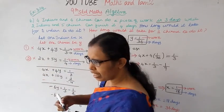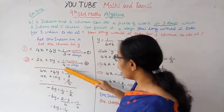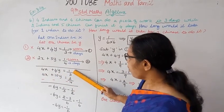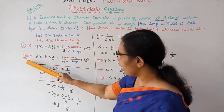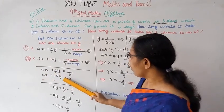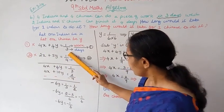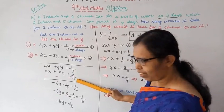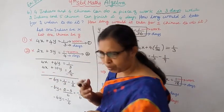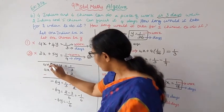To make the coefficients the same, we'll multiply the second equation by 2. First equation: 4x plus 4y equals 1 by 3. Second equation multiplied by 2: 4x plus 10y equals 2 by 4, which simplifies to 1 by 2.